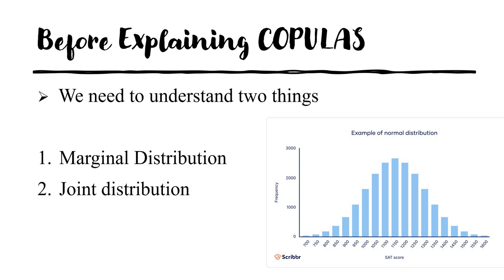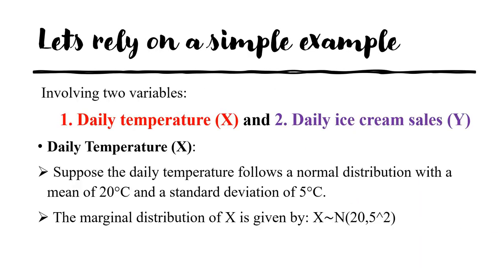What is marginal distribution and joint distribution? These are very important concepts to understand copulas. Let's use a simple example with two variables: the first is daily temperature (x) and the second is daily ice cream sales (y). The marginal distribution is the simple distribution of a single variable. For daily temperature, suppose the average is 20°C and the standard deviation is 5°C — those are the two parameters. So x ~ N(20, 5²) — that is the marginal distribution.